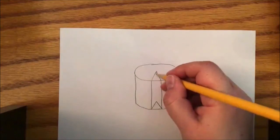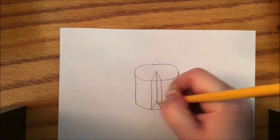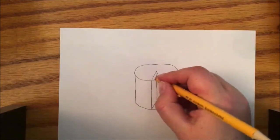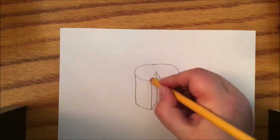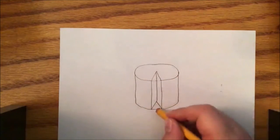Connect the points of those triangles and do a little bit of erasing. We want to erase part of the oval inside the triangle and the bottom right here.